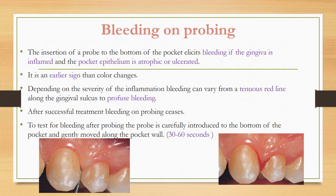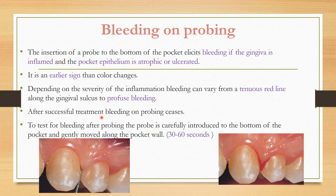Bleeding on probing occurs when a probe is inserted to the bottom of the pocket if the gingival tissue is inflamed and the pocket epithelium is atrophied or ulcerated. It is an earlier sign than color changes. Depending on severity, it varies from a thin red line along the gingival crevice to profuse bleeding. After successful treatment, bleeding on probing stops. To test, the probe is carefully introduced to the base of the pocket and moved along the pocket wall; wait at least 30–60 seconds for bleeding to appear.